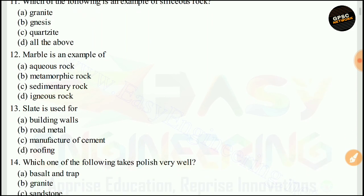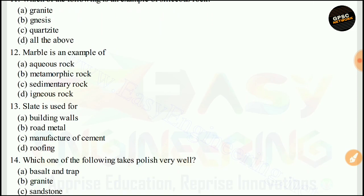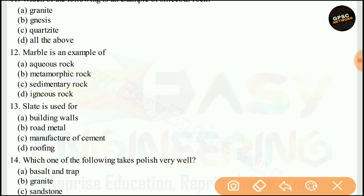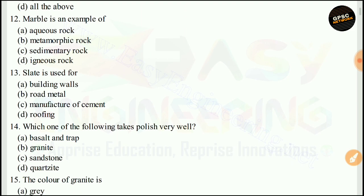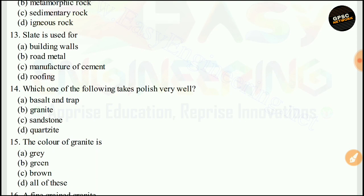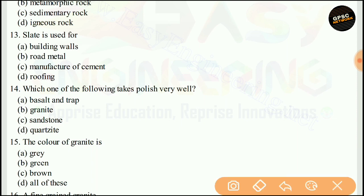Marble is an example of metamorphic rock — this is a most important question. Slate is used for roofing. The right answer is D.